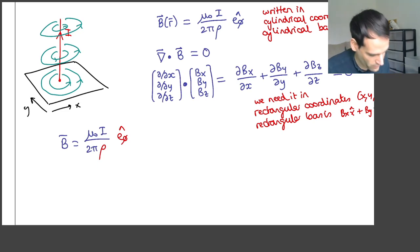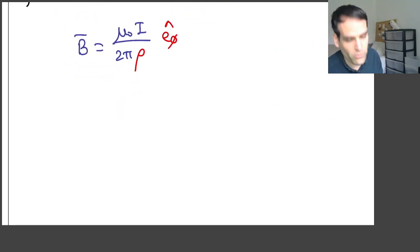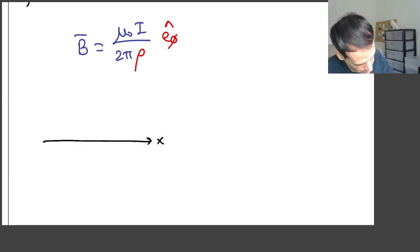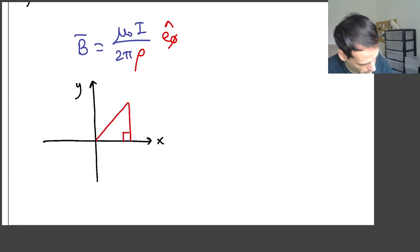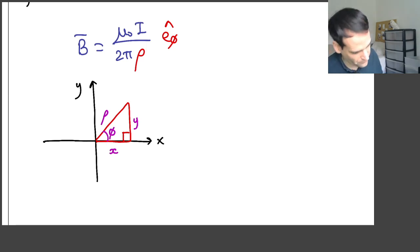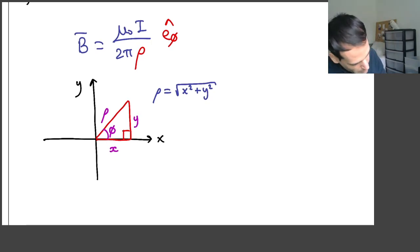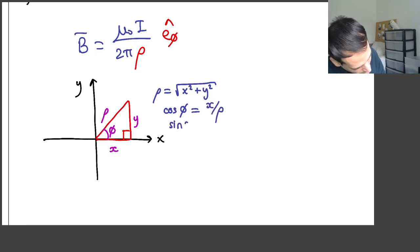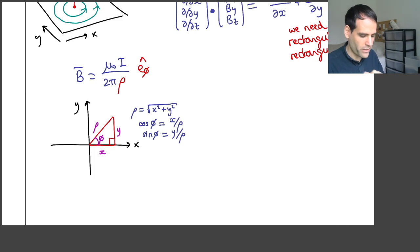To convert from cylindrical to rectangular, the best way is to draw the xy plane. You draw a right-angled triangle in which you have x here, y here, ρ here, and φ here. From this you can find that ρ = √(x² + y²) by Pythagoras' theorem, cosφ = x/ρ, and sinφ = y/ρ. This is easy to figure out just by drawing this right-angled triangle.